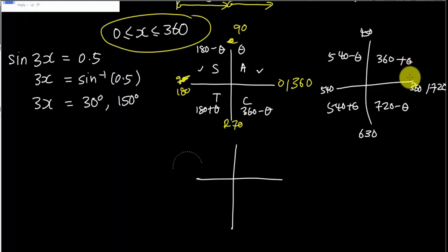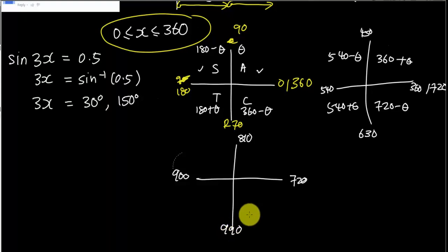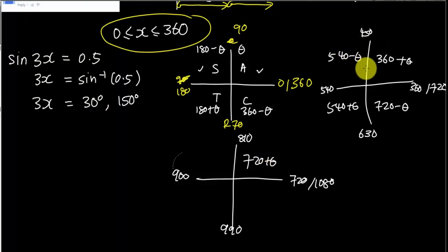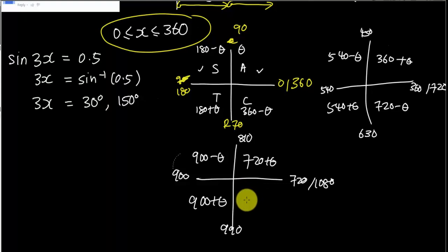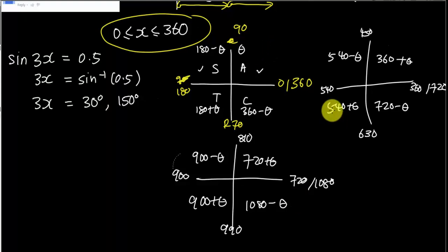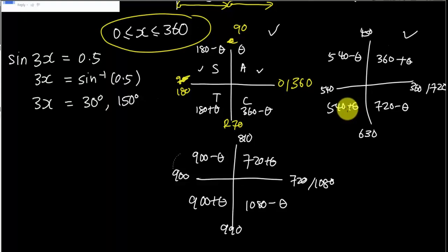For the third round, everything from the second round gets plus 360 again. So you start from 720, then 810, 900, 990, 1080. You get 720 plus delta, 900 minus delta, 900 plus delta, and 1080 minus delta. In SPMF, you will use only the first and second round — you won't go to the third round. But at least you now understand why 540 minus delta and 540 plus delta exist.